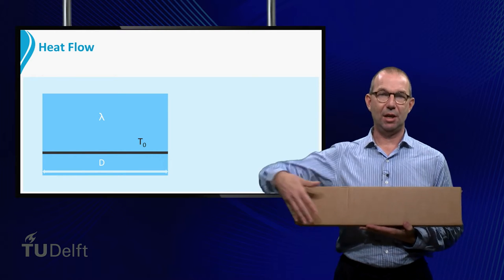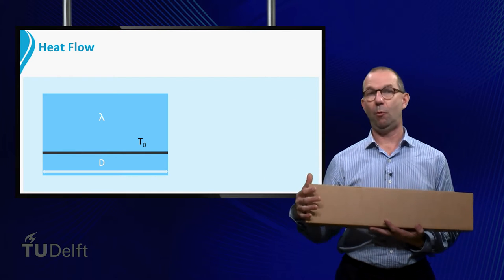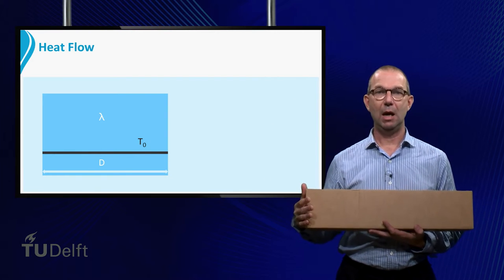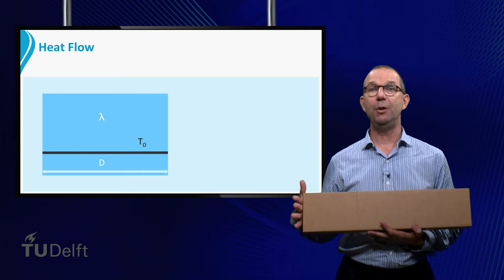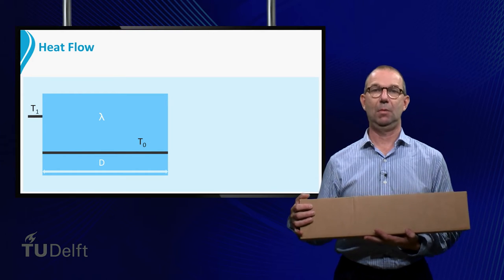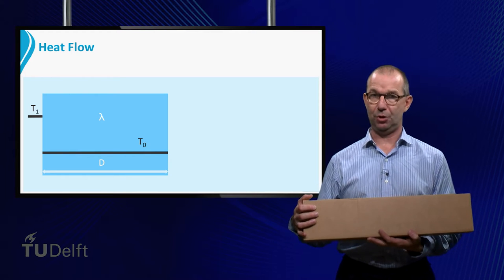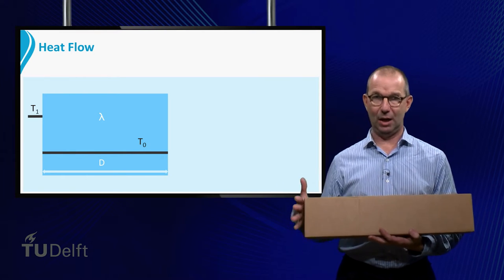It is initially at a uniform temperature T0. At some moment that we will call t=0, the left side of the plate is set to a higher temperature T1. Obviously, we now have a driving temperature difference at the left side of the plate.